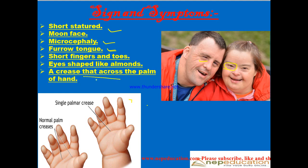There is also a crease across the palm of the hand. You can observe the crease here — this is the normal crease and this is what will happen in Down Syndrome. Those are the signs and symptoms of Down Syndrome. If you have any confusion or want a video on any other topic, please comment in the comment box. I shall try to fulfill your requirement as soon as possible. Thank you very much for watching this video.